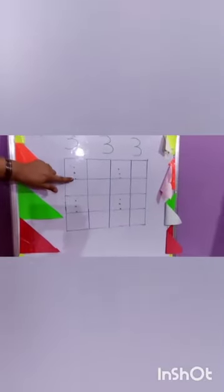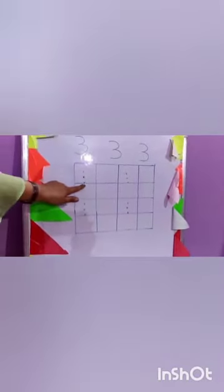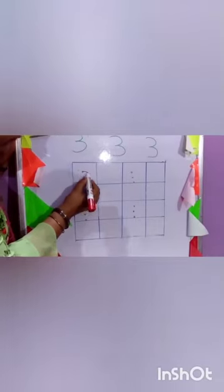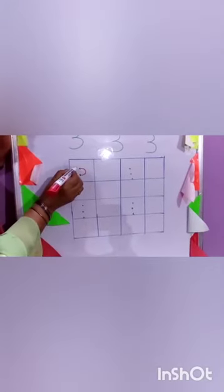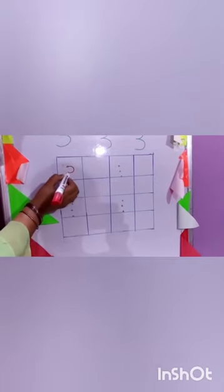Now children, it's writing time. अभी हम three को आपकी workbook पे लिखेंगे. Dear parents, आपको three dots देने हैं three बनाने के लिए — like this. जो नीचे वाला dot होगा वो bottom line को touch करना चाहिए. Make a curve — आपको dot से dot तक आने में एक curve बनानी है, then stop. Again make another curve — this is number three. आपको two curves बनानी हैं from one dot to another dot.